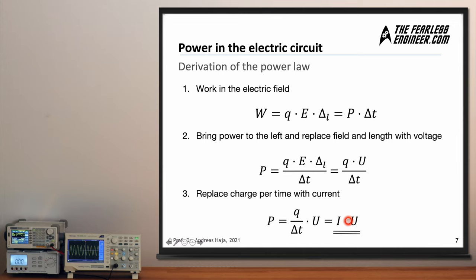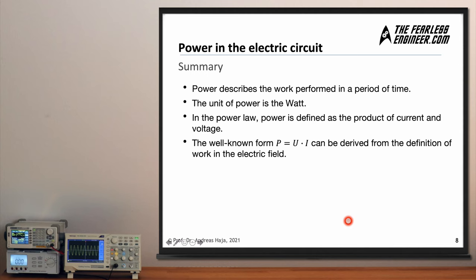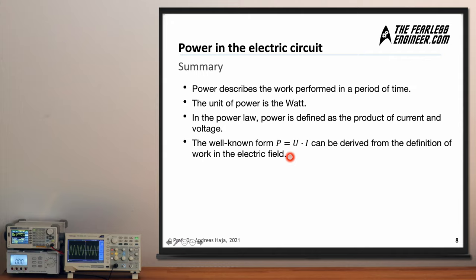Let's summarize the major takeaways. First, power describes the work being performed in a given period of time — this is what distinguishes it from work, which does not account for time. Second, the unit of power is the watt, or equivalently joules per second. Third, in the power law defined by James Watt, power is the product of current and voltage. And finally, the well-known form P = V × I can be easily derived from the definition of work in the electric field.